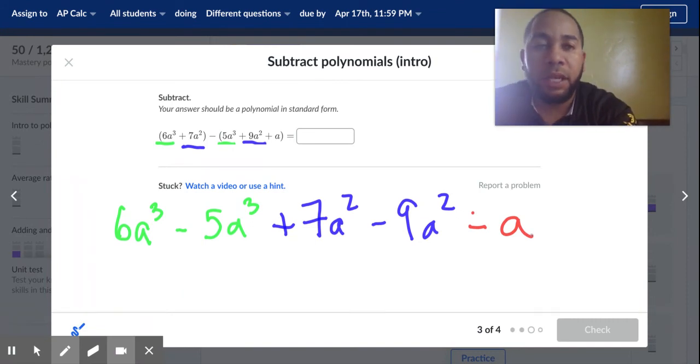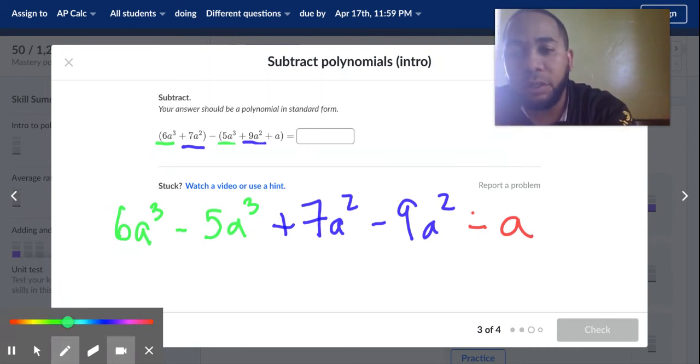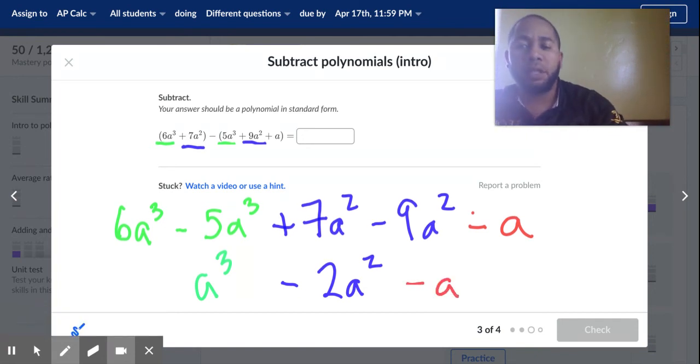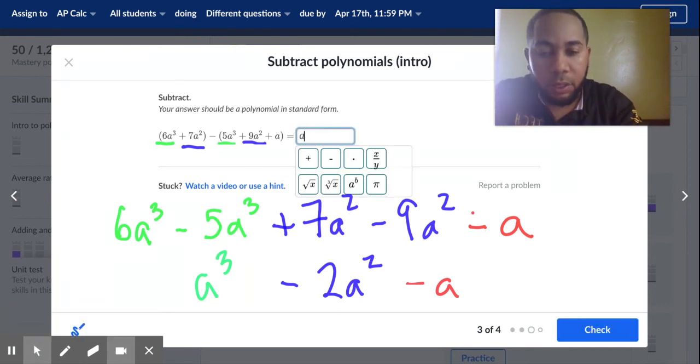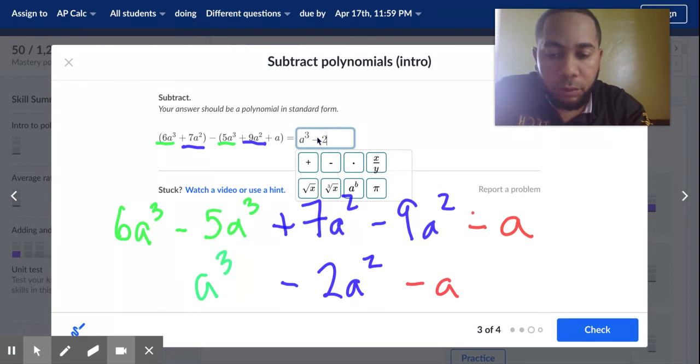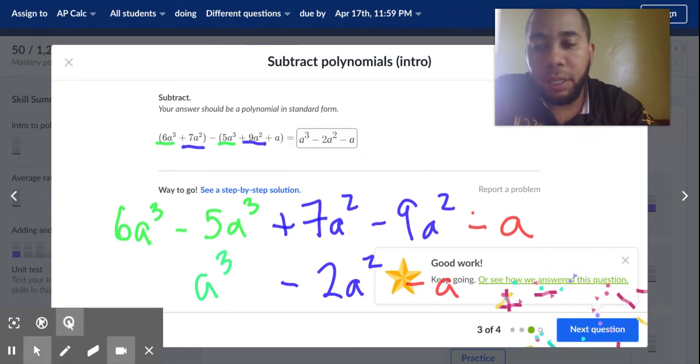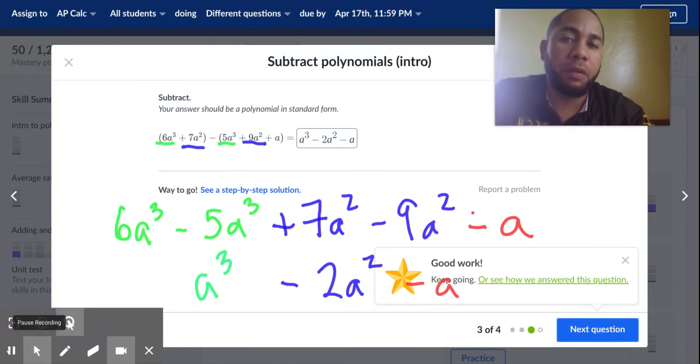Let's start combining them. In green, this is going to end up being just 1a to the third. In blue, this is going to end up being negative 2a squared. And in red, this is going to end up being minus a. So let's go ahead and type that in - you got this. a to the third minus 2a squared minus a, and that is the end. Just check with me if you have any problems.